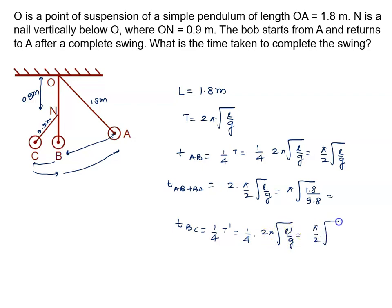So total time from B to C plus C to B is twice of this time period: 2 into π/2 root L dash by g, which equals π root L dash by g.